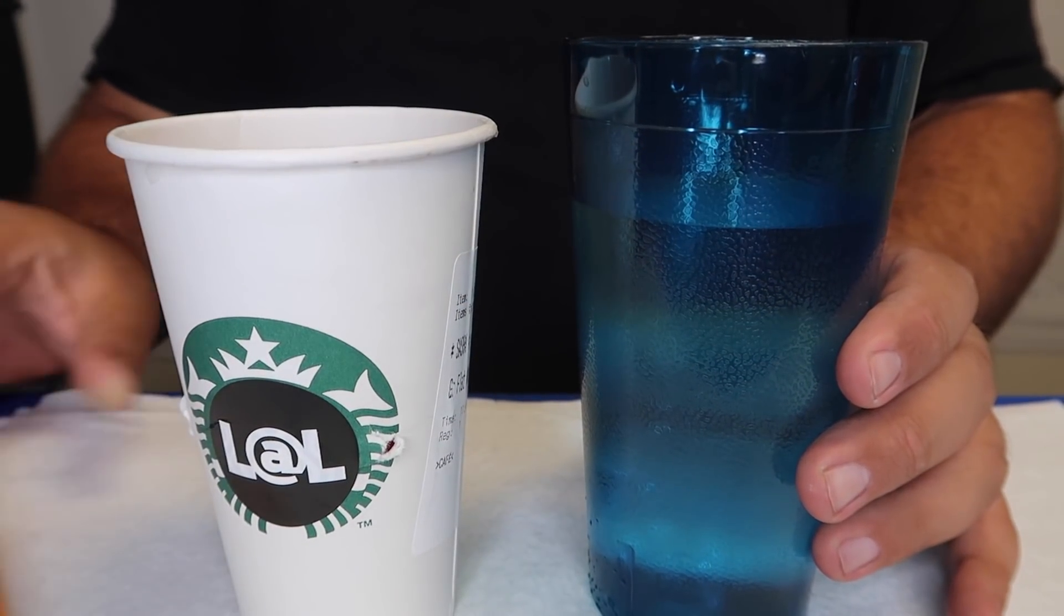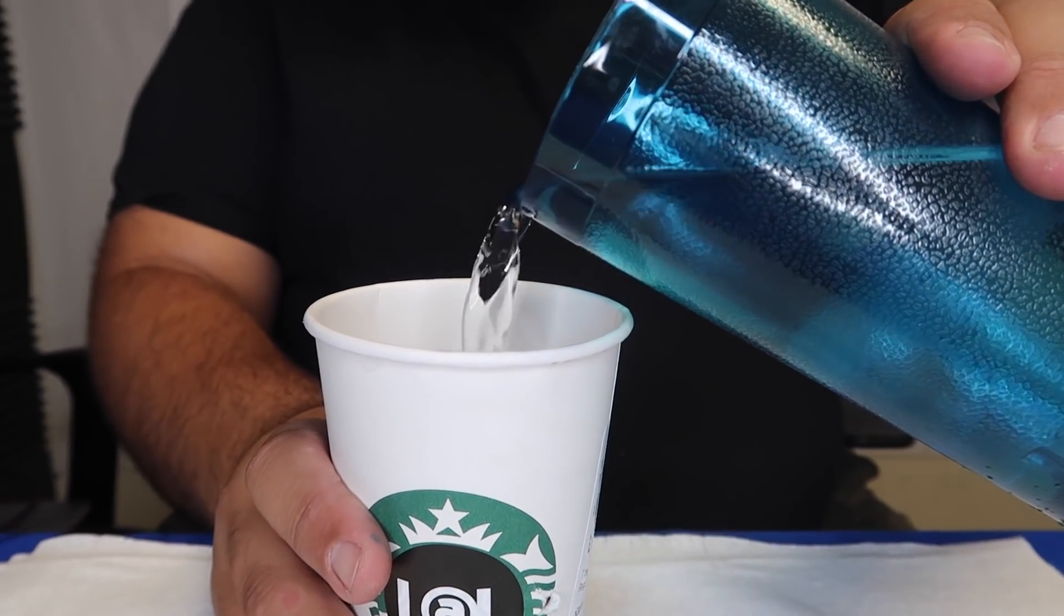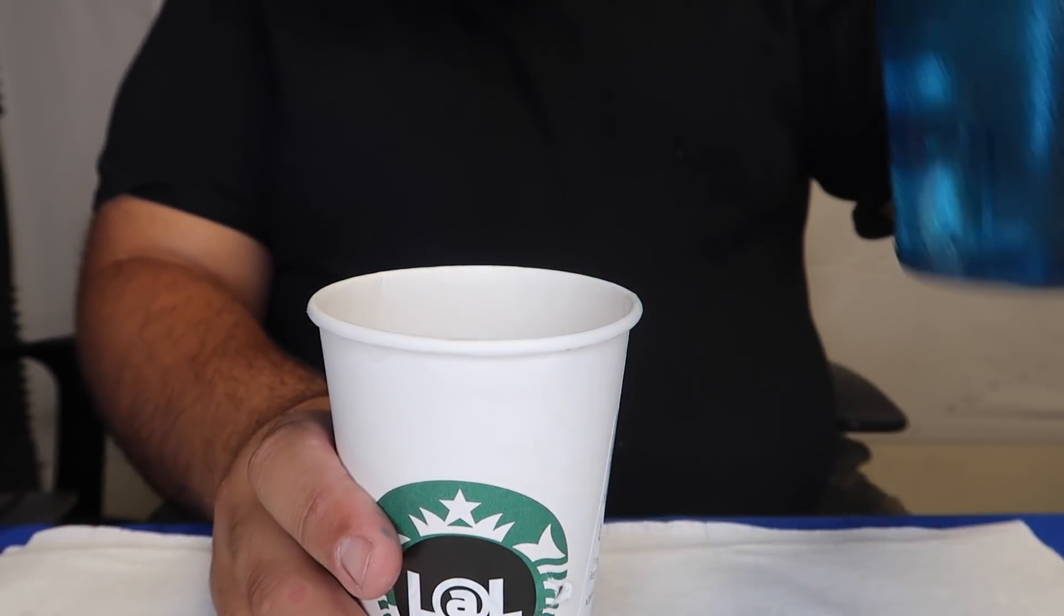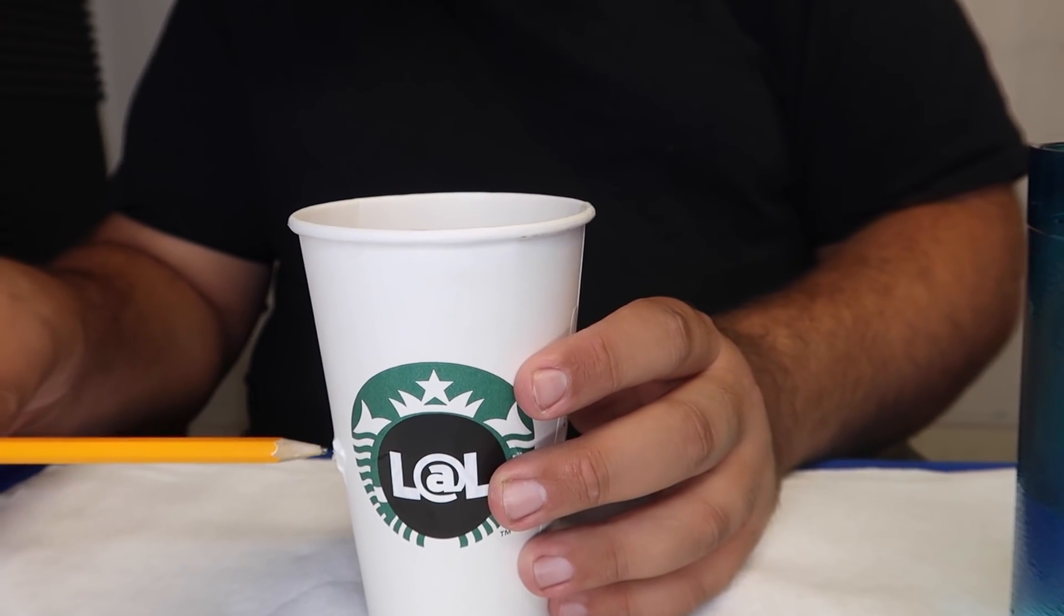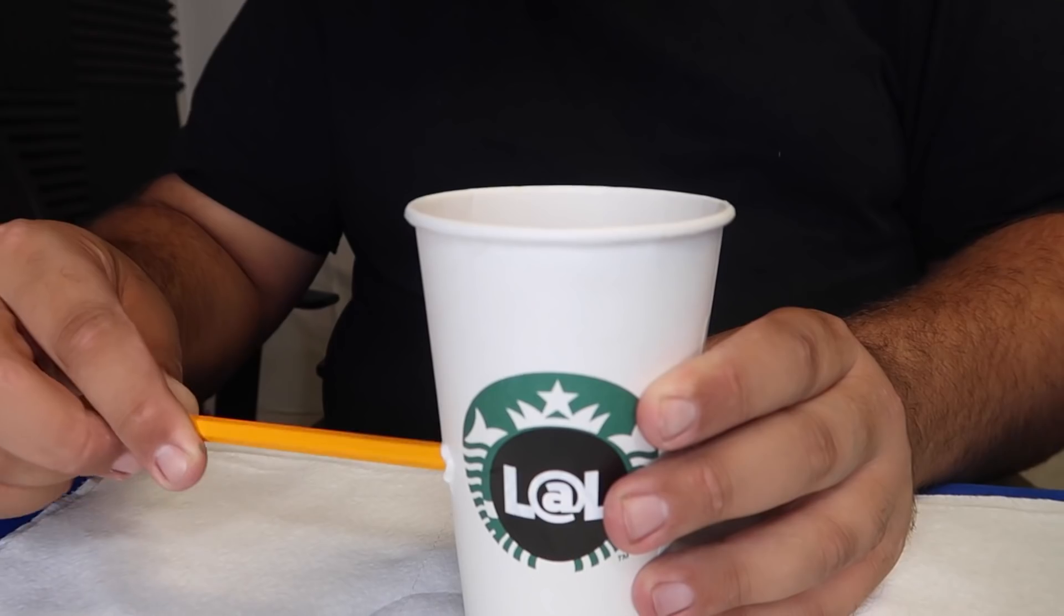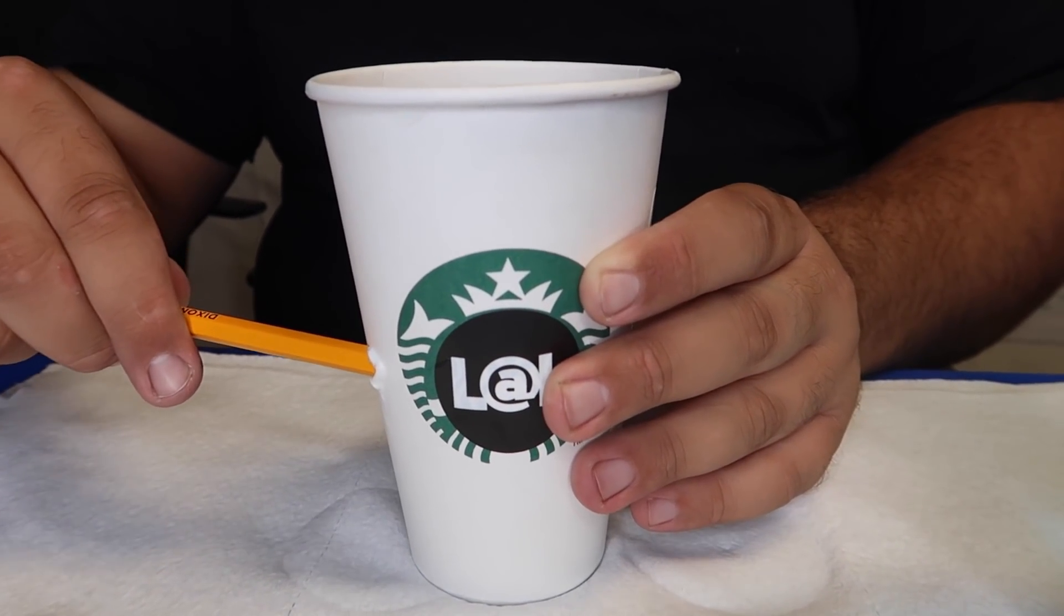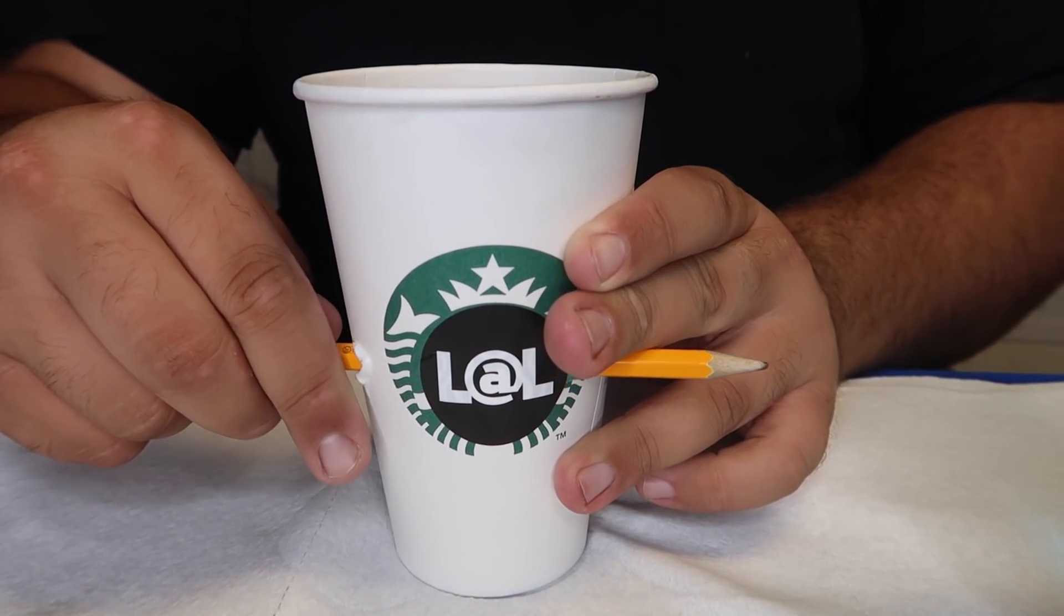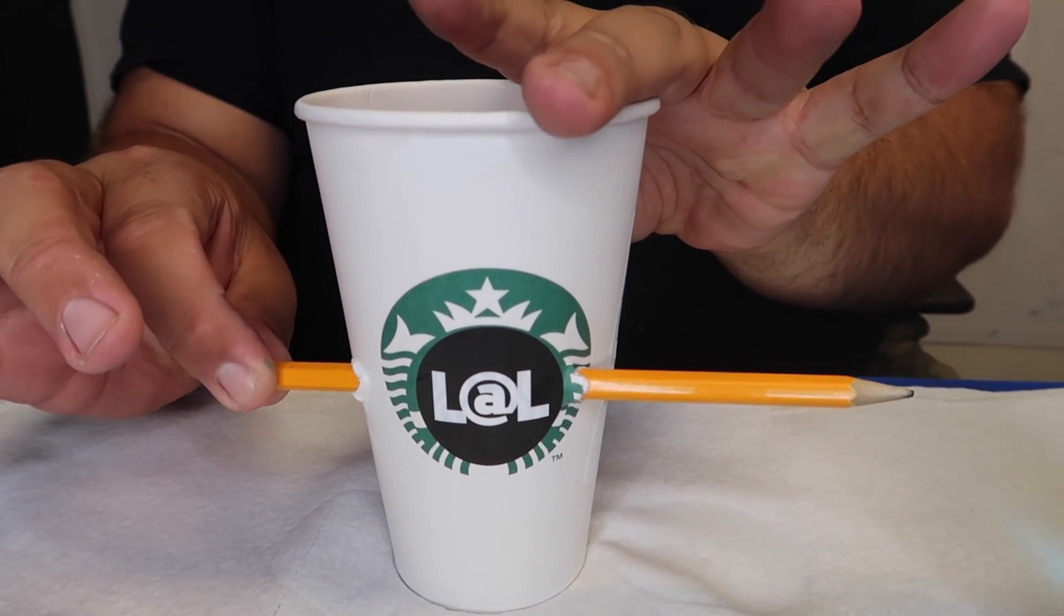Here's a simple magic trick that looks totally impossible. Check this out. So I have a pencil here. I also have a paper cup and some water. I'm just going to pour the water into the paper cup here. Perfect. Now, take my pencil and actually stick it right through the cup. Just like that. None of the water spills whatsoever.